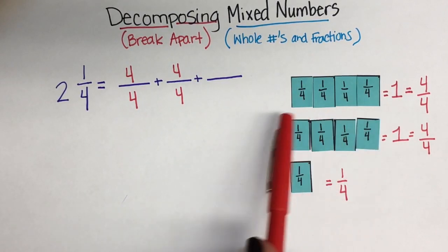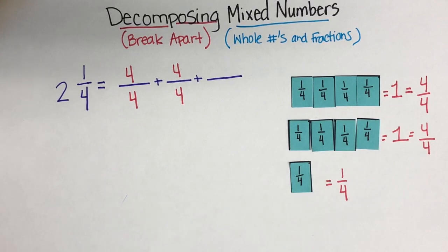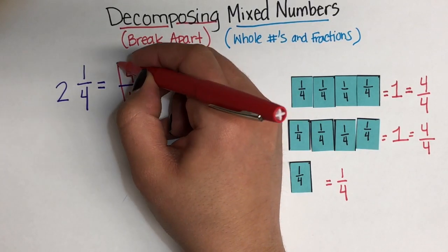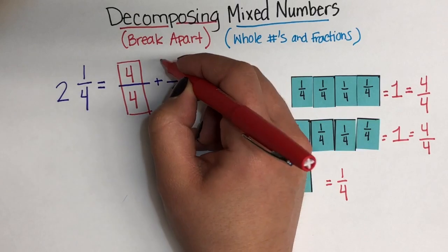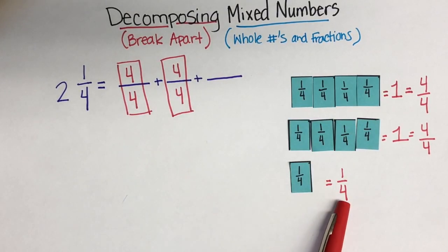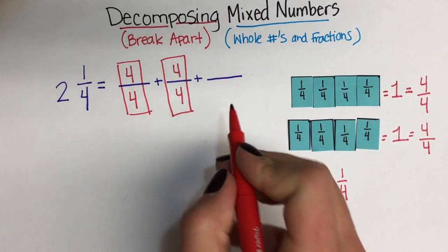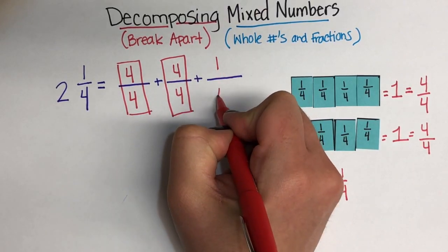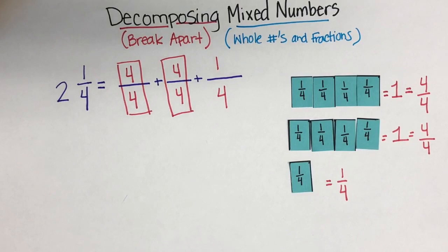if you look at the mixed number, 2 and 1/4, we can rewrite 2 as 1 whole plus another whole. But we're just writing it in a different way, you guys. It means the same thing. And then we take that last part of the fraction.